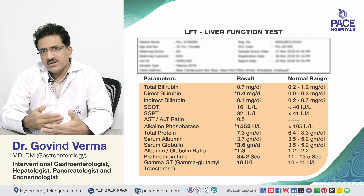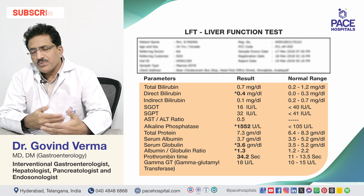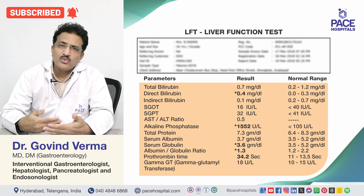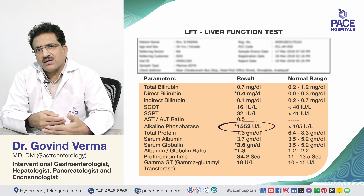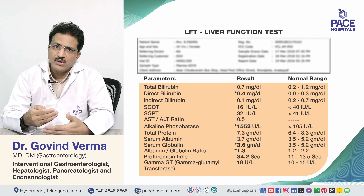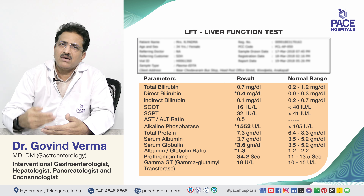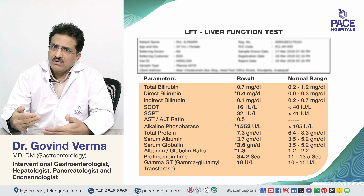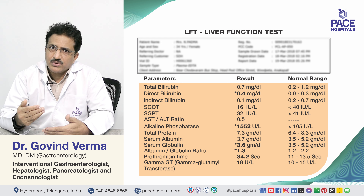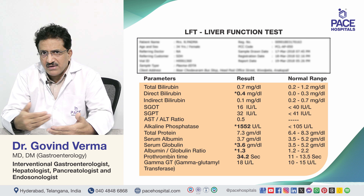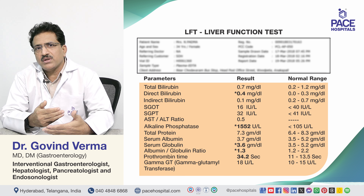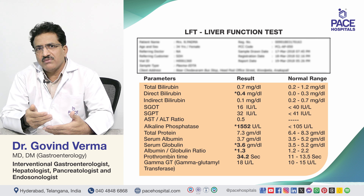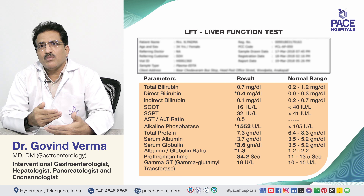In bile duct obstruction, the LFT shows very high alkaline phosphatase, very high bilirubin with predominantly conjugated (direct) fraction. Albumin may or may not be low. Prothrombin time is often prolonged. SGOT and SGPT may or may not be elevated. The combination of high conjugated bilirubin, high alkaline phosphatase, and prolonged prothrombin time strongly suggests biliary obstruction.